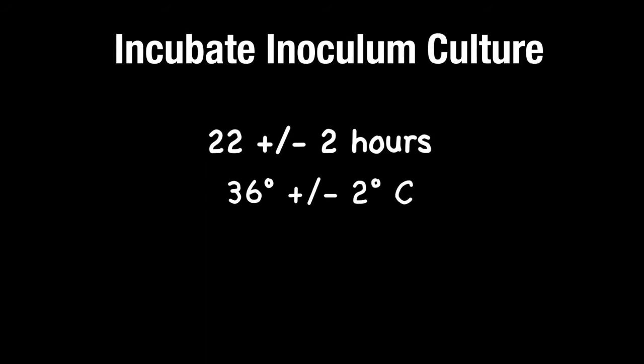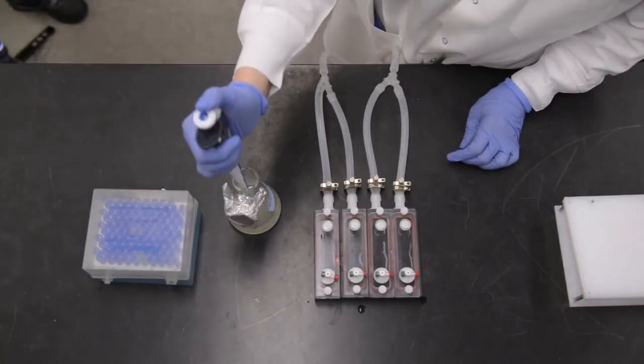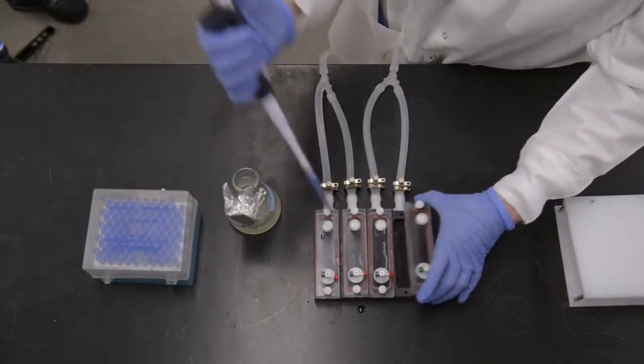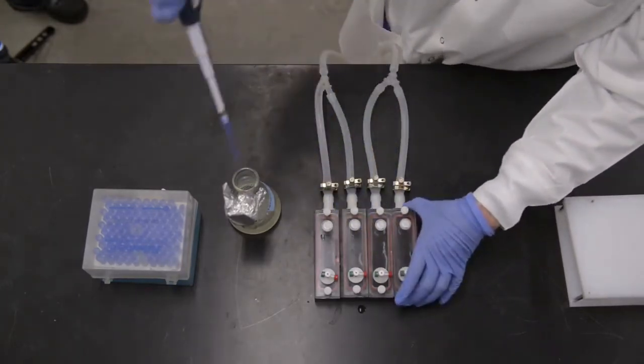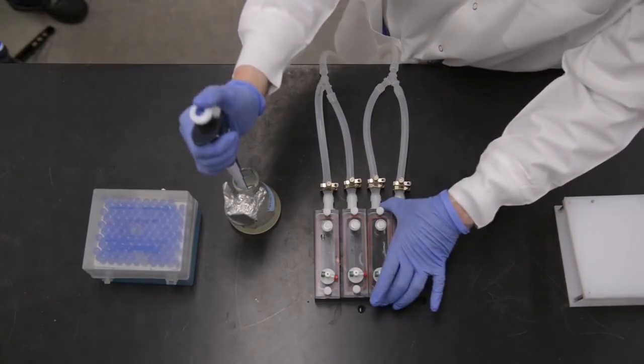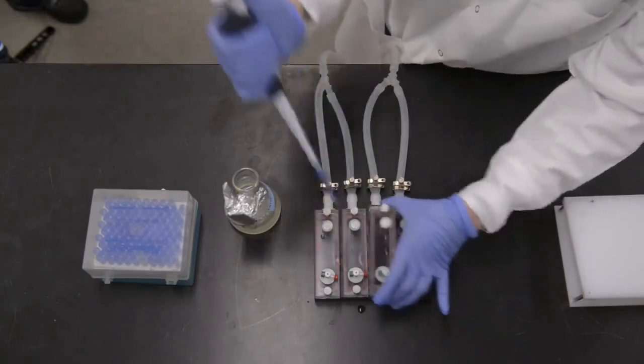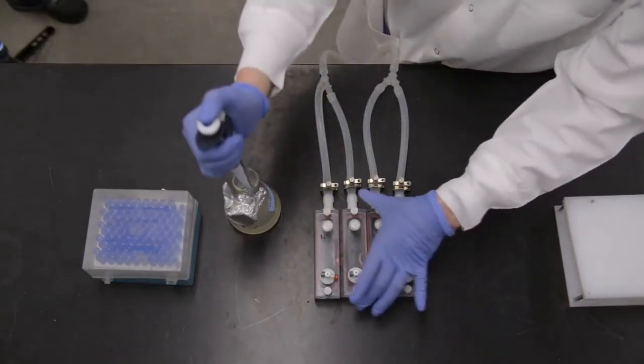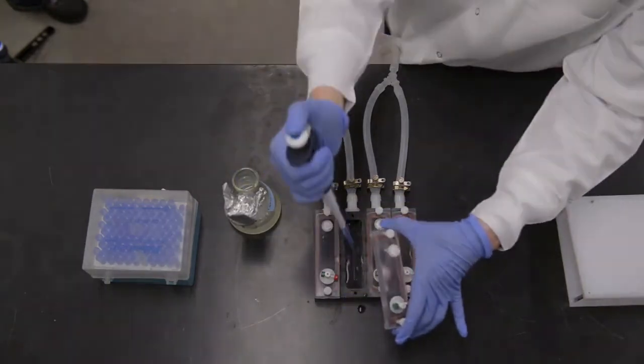Incubate the inoculum culture for 22 plus or minus 2 hours at 36 plus or minus 2 degrees Celsius, shaking at 125 RPM. Batch biofilm growth begins when 1 milliliter of the inoculum is added to the batch medium in each channel. Incubate the reactor in batch phase for 6 hours at 21 plus or minus 2 degrees Celsius. The cell density of the inoculum should be approximately 10 to the 8 CFU per milliliter and should be confirmed by serial dilutions and plating.